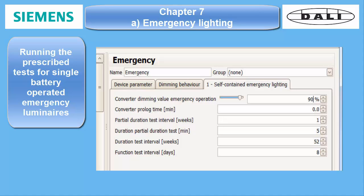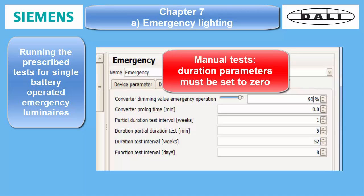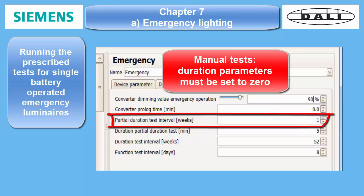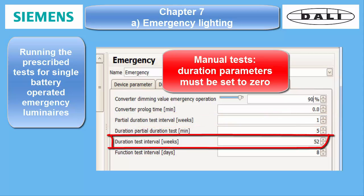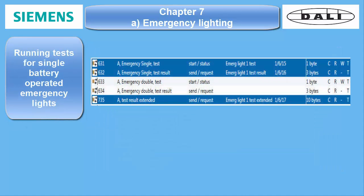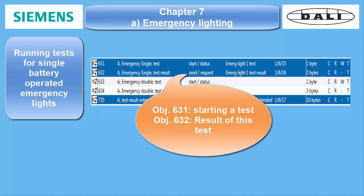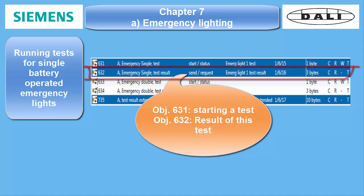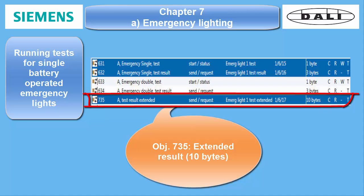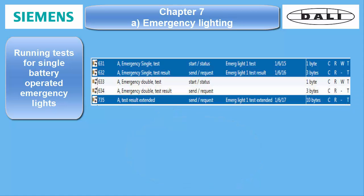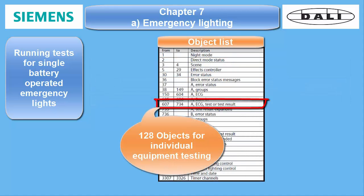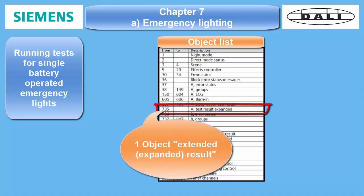However, if the facility management wants to run these tests manually, the automatic function can be switched off in the parameter settings — the duration test parameters must both be set to zero. For manual test triggering, two communication objects are available: the individual simple test control object (number 631, 1 byte) with its result object (number 632, 3 bytes), and the extended test object 735 for channel A, which comprises 10 bytes. While the simple test objects come along with each emergency ECG, the extended object is unique for each channel, meaning the ballast number is encoded in the extended test result.